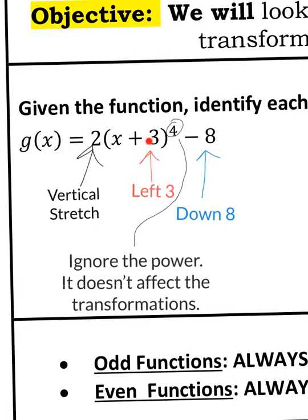If you add on the inside, it goes left. Minus on the inside goes right. So plus 3 made it go left 3. If you add on the outside, it goes up. Minus on the outside goes down. So minus 8 went down 8.